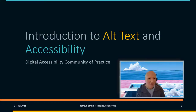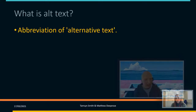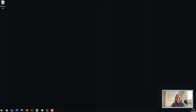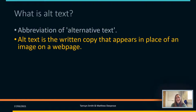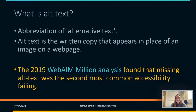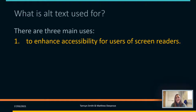Today we are covering alt text and accessibility. Alt text is an abbreviation of alternative text — the written copy that appears in place of an image on a web page. The 2019 WebAIM million analysis found that missing alt text was the second most common accessibility failing, so it's really important we make sure we have alt text. It has three main uses.